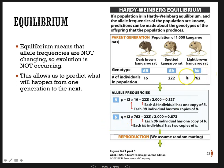You can do the same thing for q. The 762 homozygous recessive individuals each have two little-b alleles, so 2 × 762 = 1524. There are also some little-b alleles in the 222 heterozygotes, so 1524 + 222 = 1746. We still divide by the total number of alleles, which is 2000. So q = 1746 ÷ 2000 = 0.873.